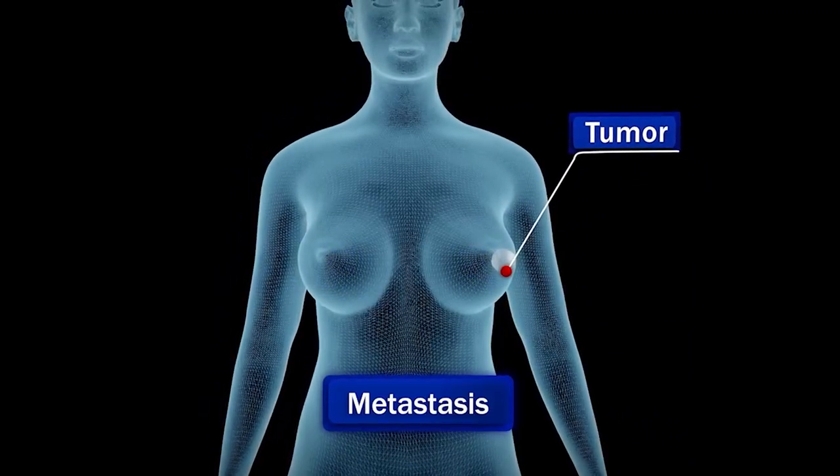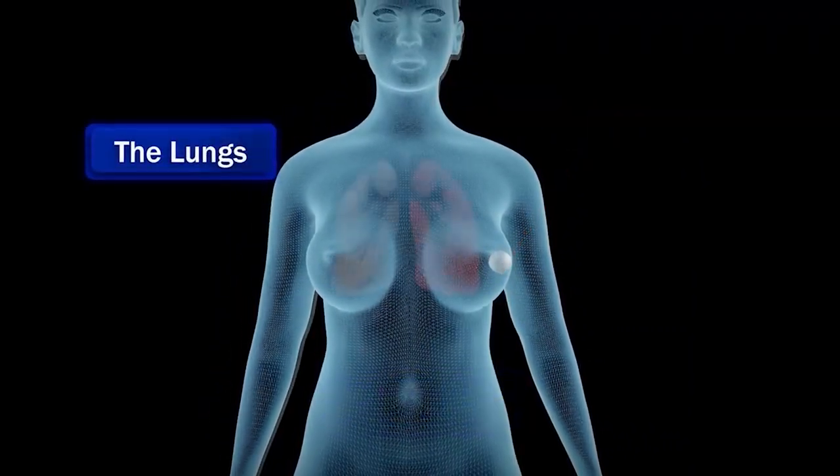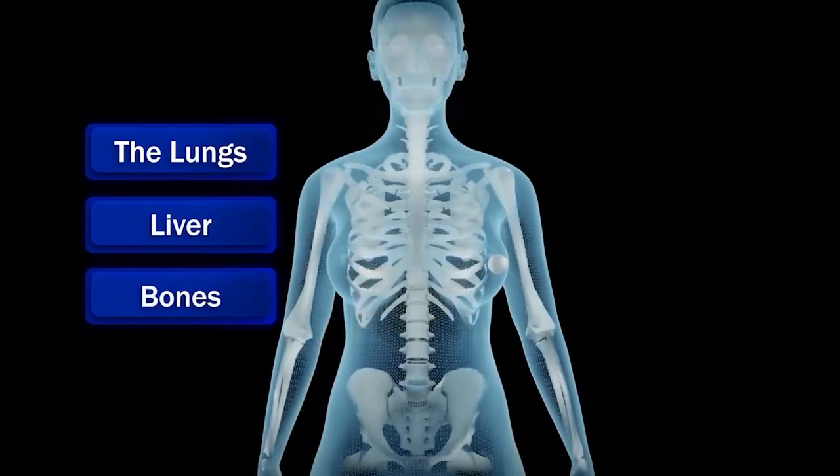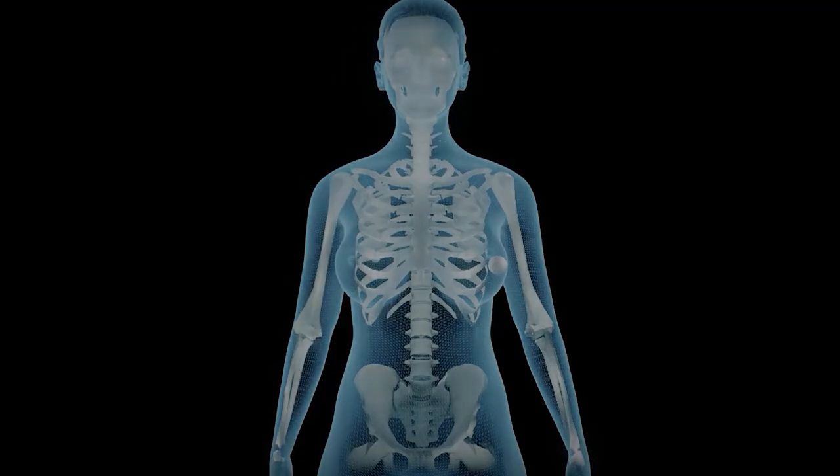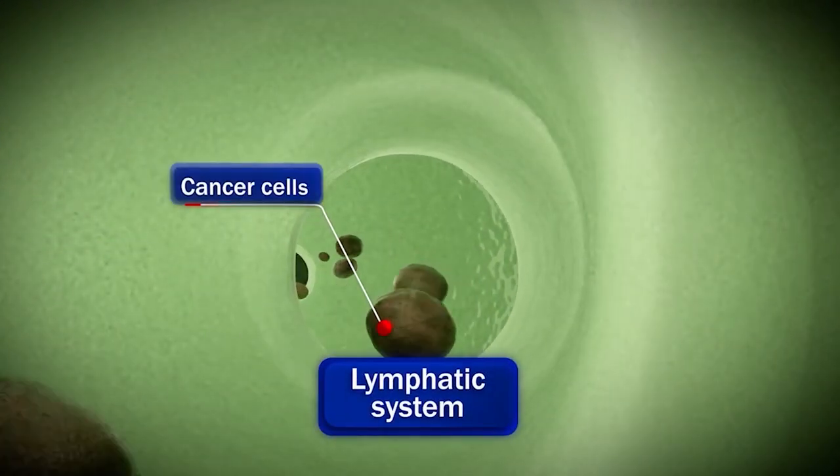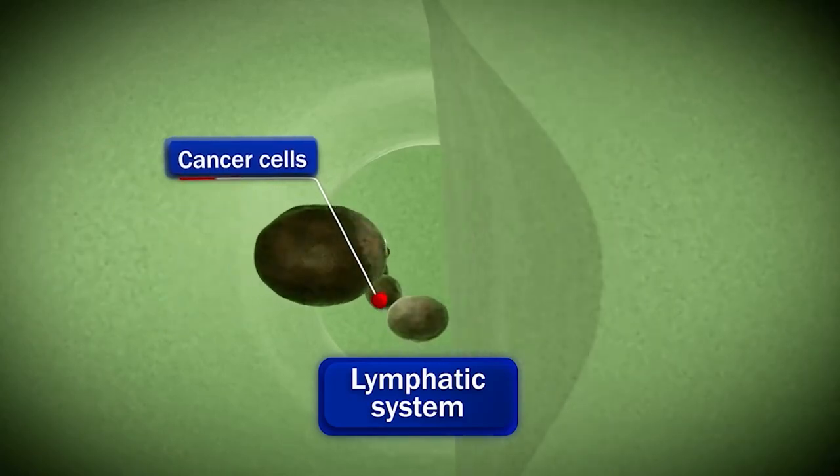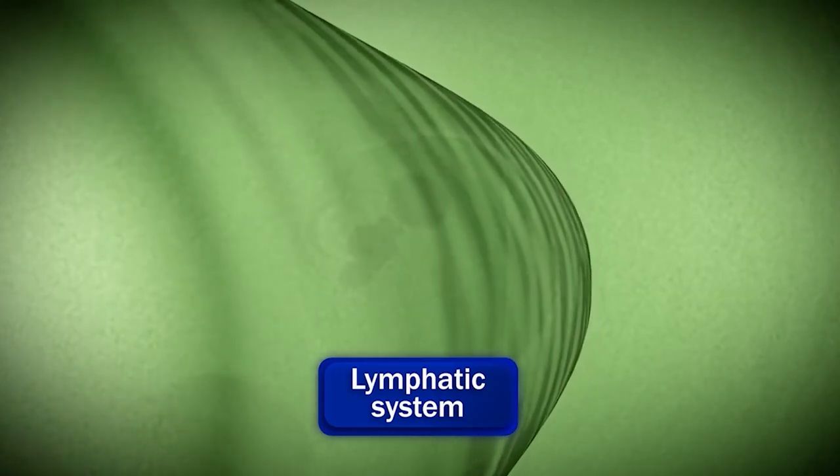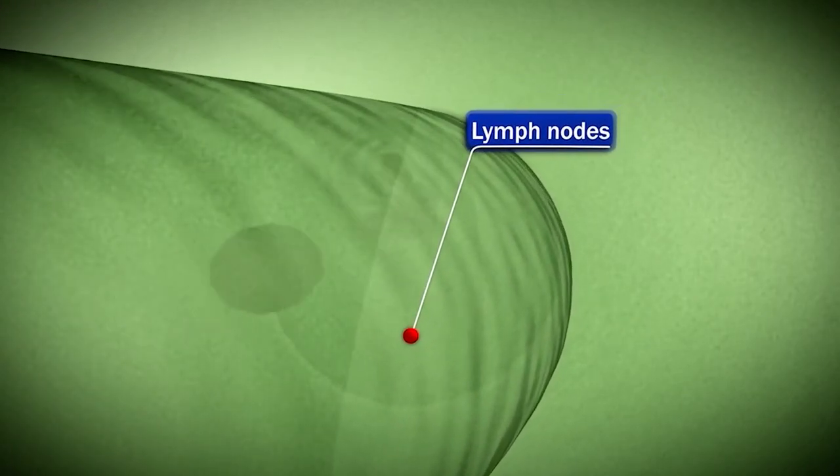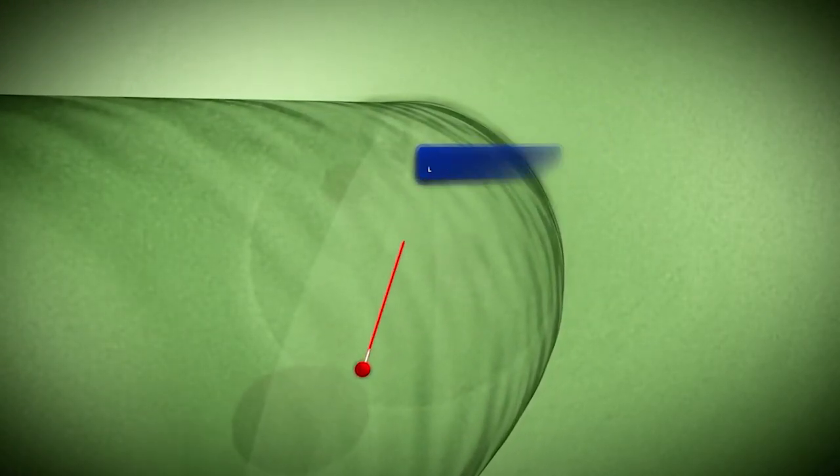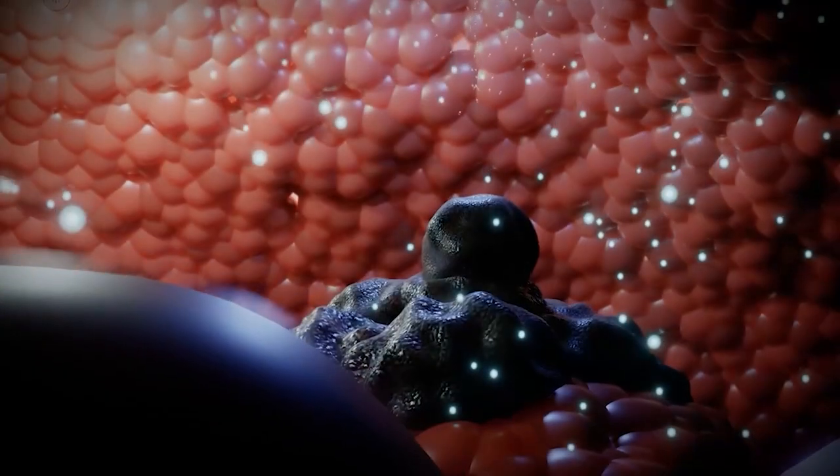Additional tumors can form in areas such as the lungs, liver, and bones. Another way cancer can spread is through your lymphatic system. Cancer cells can enter the lymphatic vessels near the tumor and travel to small glands called lymph nodes. If the cells pass through the nodes, they can continue to travel through the lymphatic system and form additional tumors.